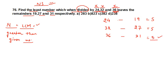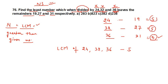So you find the LCM of 24, 32 and 36, then subtract the common difference of 5. The LCM of 24, 32 and 36 is 288. Therefore, 288 minus 5 equals 283. The answer is 283.